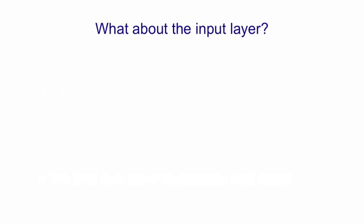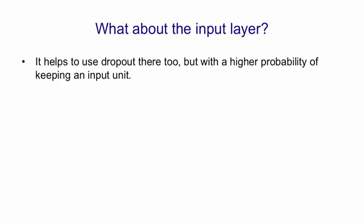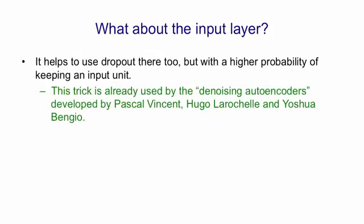What about the input layer? Well, we can use the same trick there, too. We use dropout on the inputs, but we use a higher probability of keeping an input. This trick's already in use in a system called denoising auto-encoders, developed by Pascal Vincent, Hugo Larochelle, and Yoshua Bengio at the University of Montreal. And it works very well.